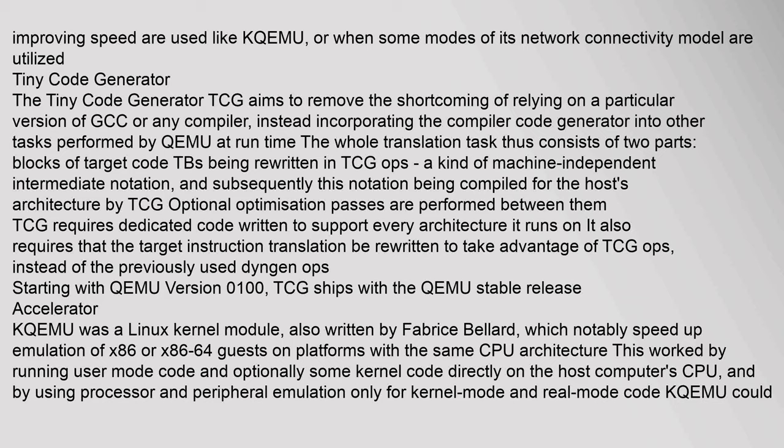The Tiny Code Generator (TCG) aims to remove the shortcoming of relying on a particular version of GCC or any compiler, instead incorporating the compiler's code generator into tasks performed by QEMU at runtime. The translation task consists of two parts: blocks of target code (TBs) being rewritten in TCG ops — a machine-independent intermediate notation — and subsequently this notation being compiled for the host's architecture by TCG. Optional optimization passes are performed between them. Starting with QEMU version 0.10.0, TCG ships with the QEMU stable release.